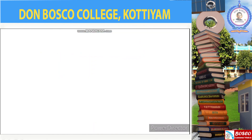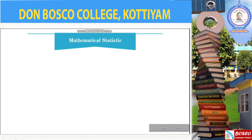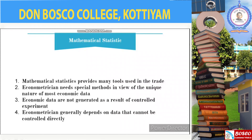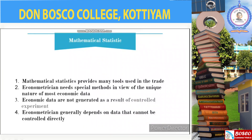The last reason: mathematical statistics. Although mathematical statistics provides many tools used in econometrics, the econometrician often needs special methods in view of the unique nature of most economic data — that is, the data are not generated as a result of a controlled experiment. So the econometrician, like the meteorologist, generally depends on data that cannot be controlled directly.